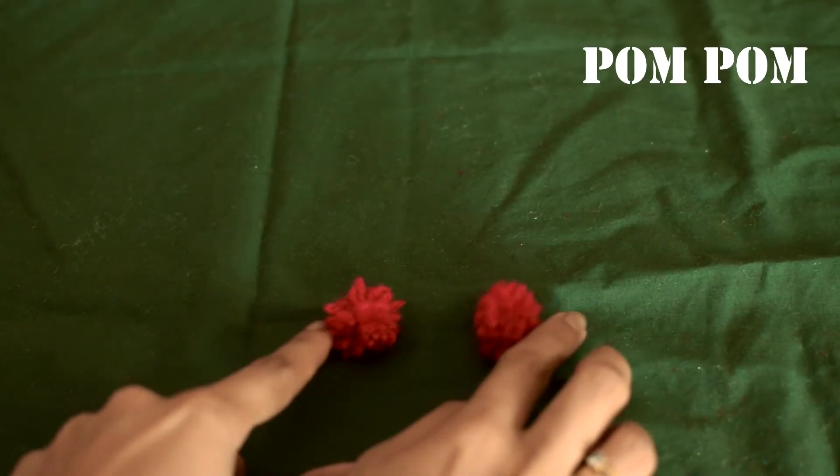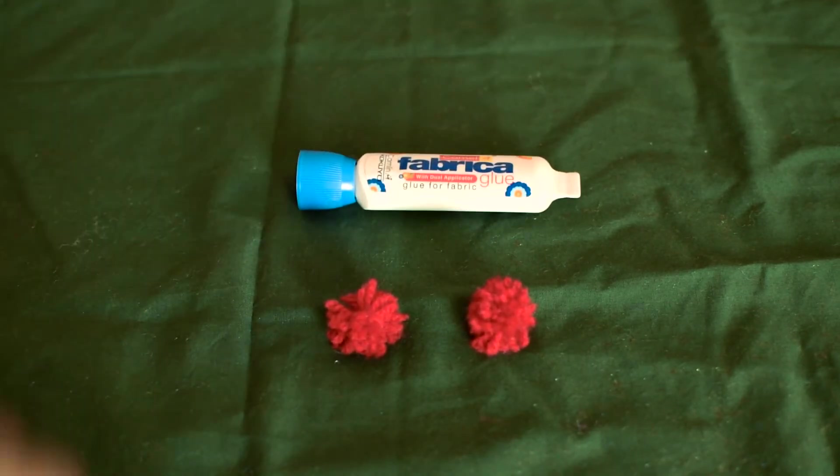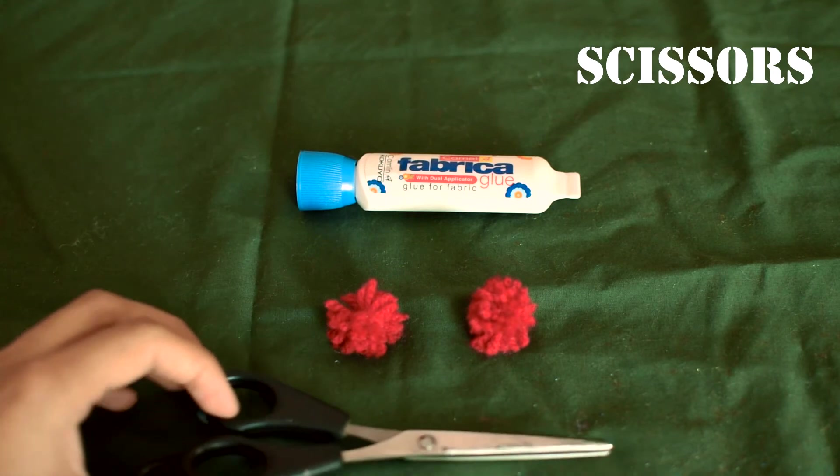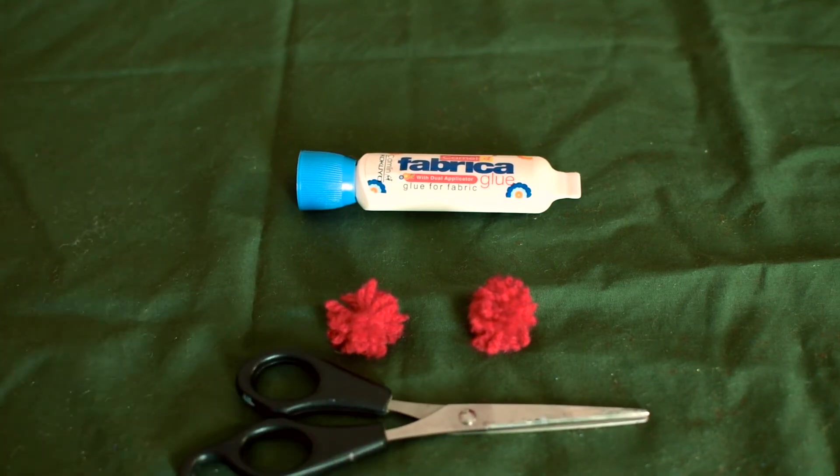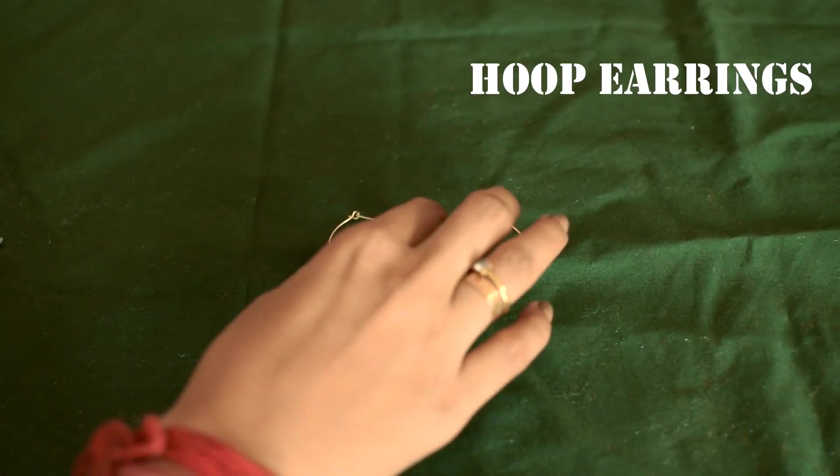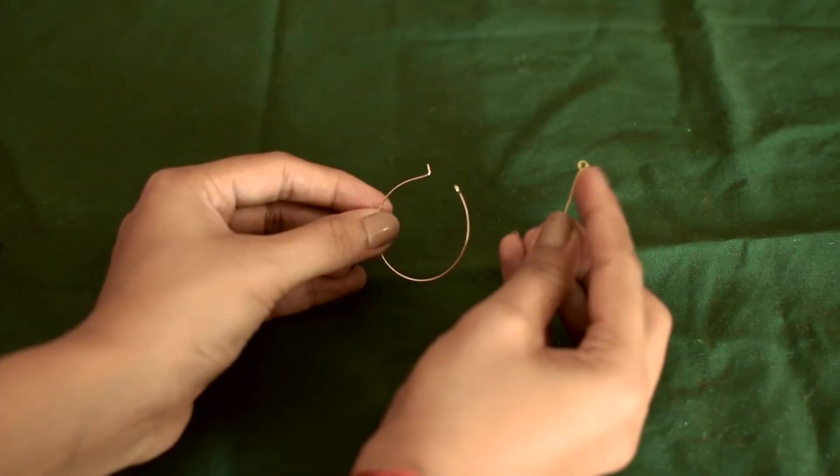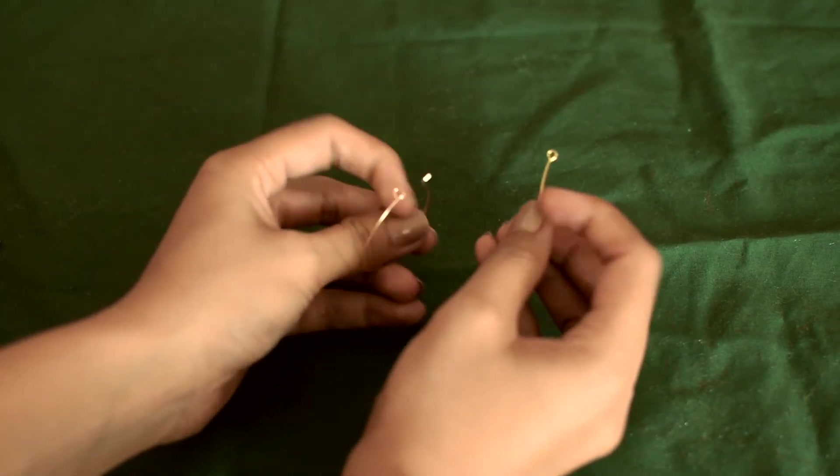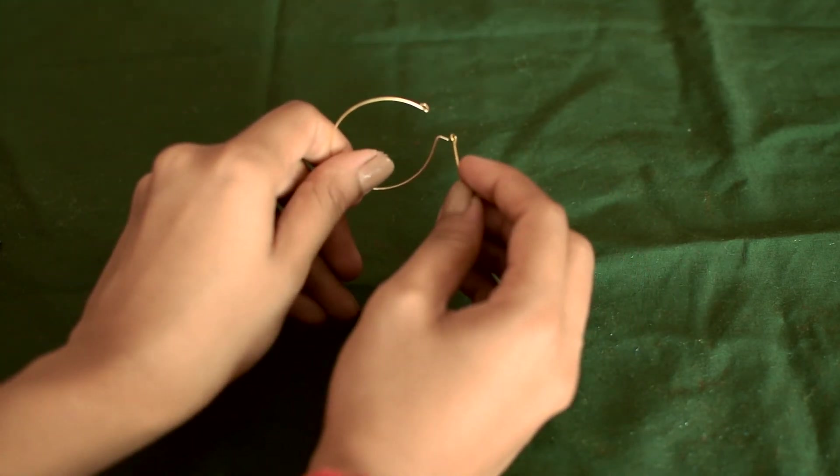For this you need two similar pom-poms. Here I've made two red pom-poms. Then you need some fabric glue, scissors, a pair of hoop earrings. I have two gold hoop earrings and two eye pins. Now I'm going to insert the eye pin through the hoop earring.